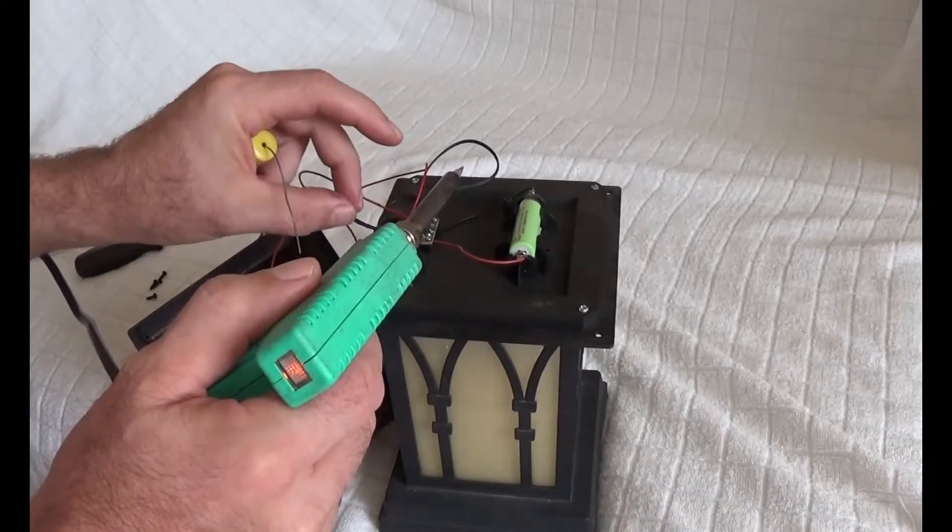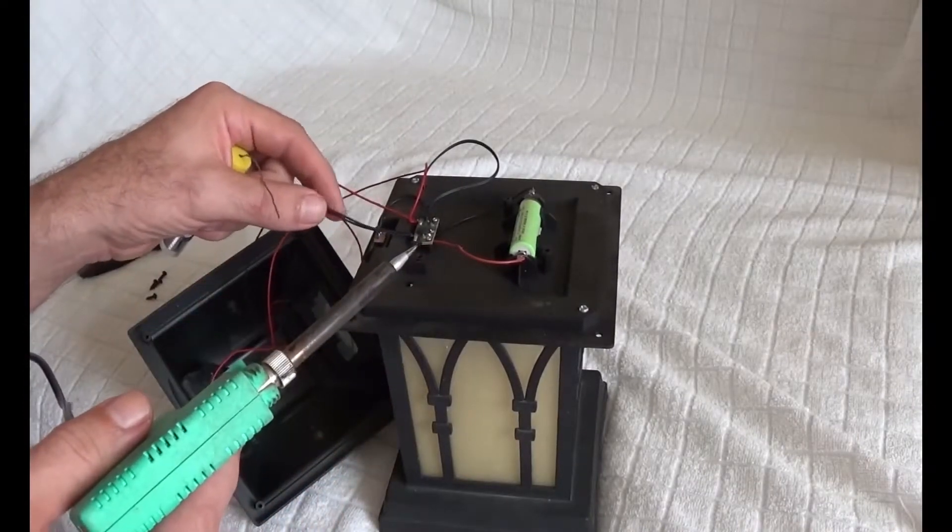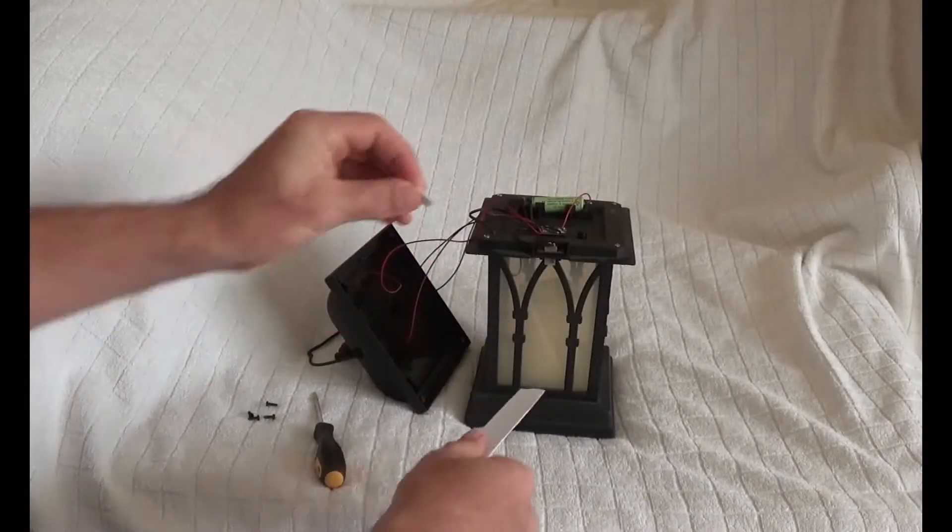We take the soldering iron and carefully solder the wire. We will check that the connection is good and that the job is finished. Now let's fix the battery holder.